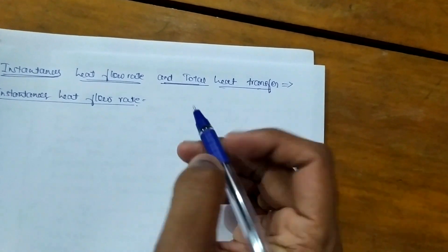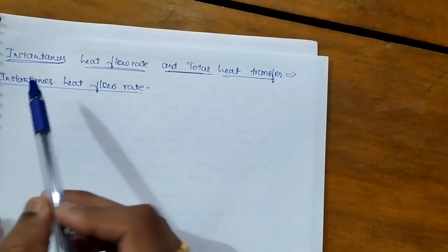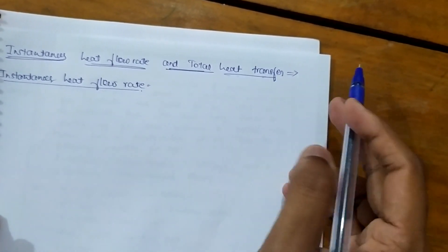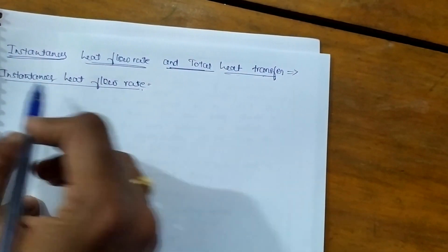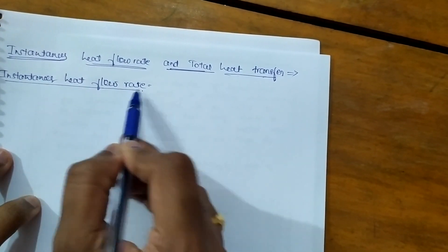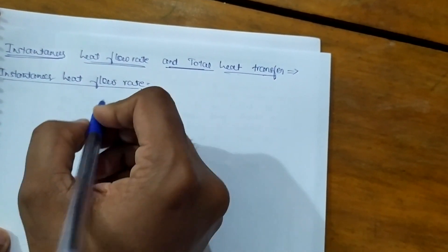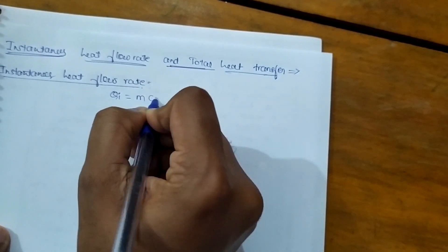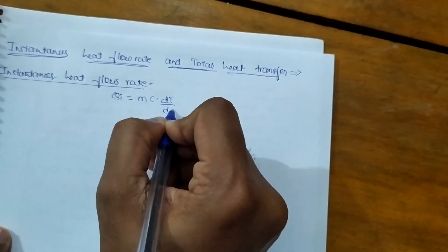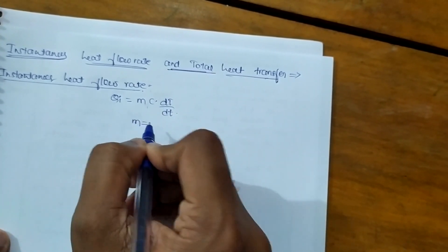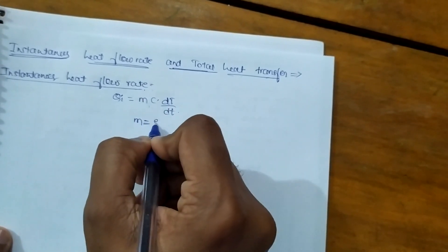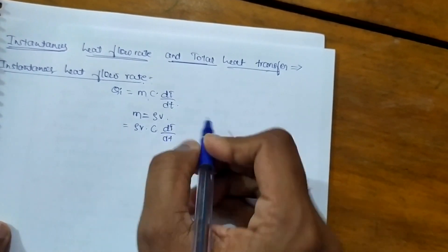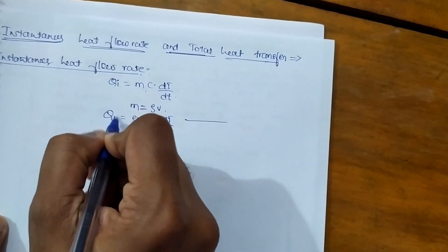Good evening students. In this video we are discussing instantaneous heat flow rate and total heat transfer derivation. First we consider instantaneous heat flow rate, that is the heat flow rate given by qi = m·c·dT/dt, where m = ρV, so qi = ρV·c·dT/dt. Put it as equation 1.